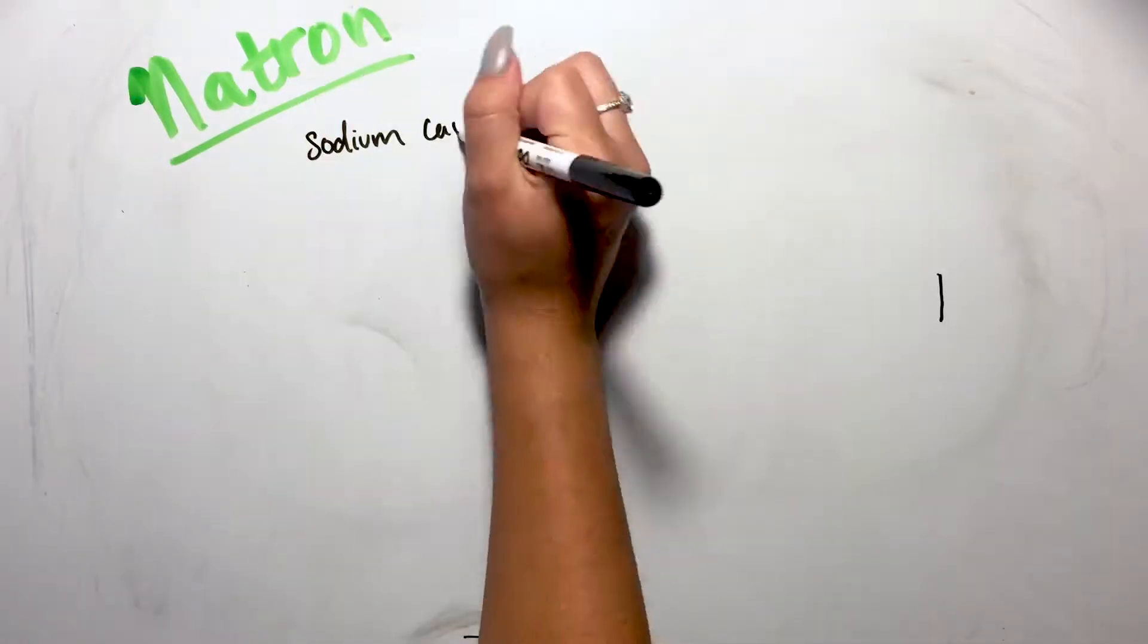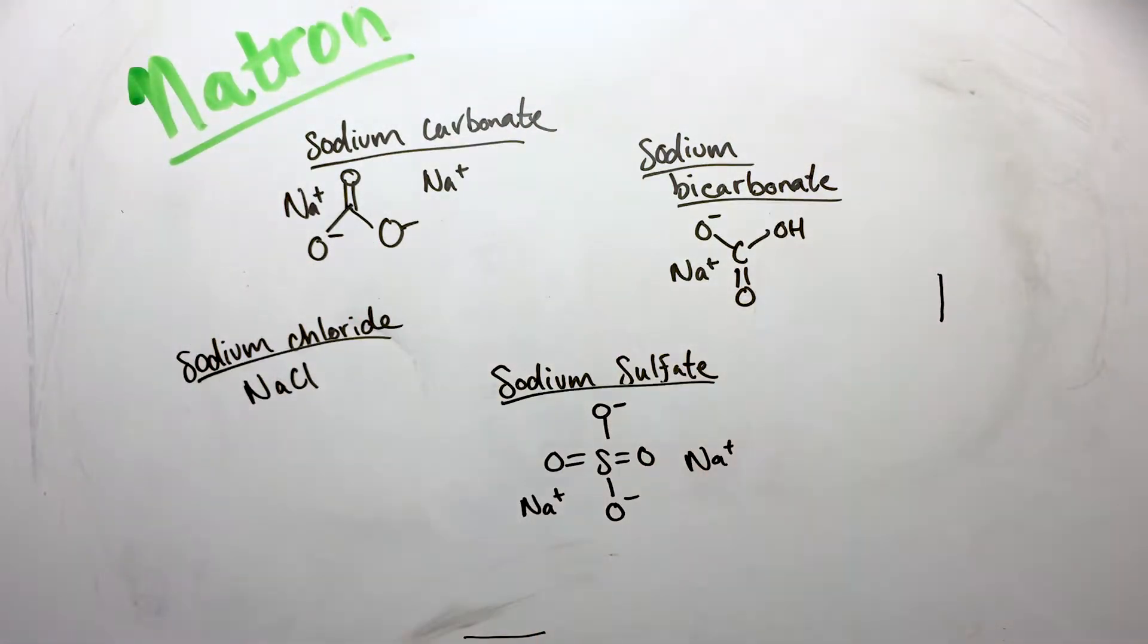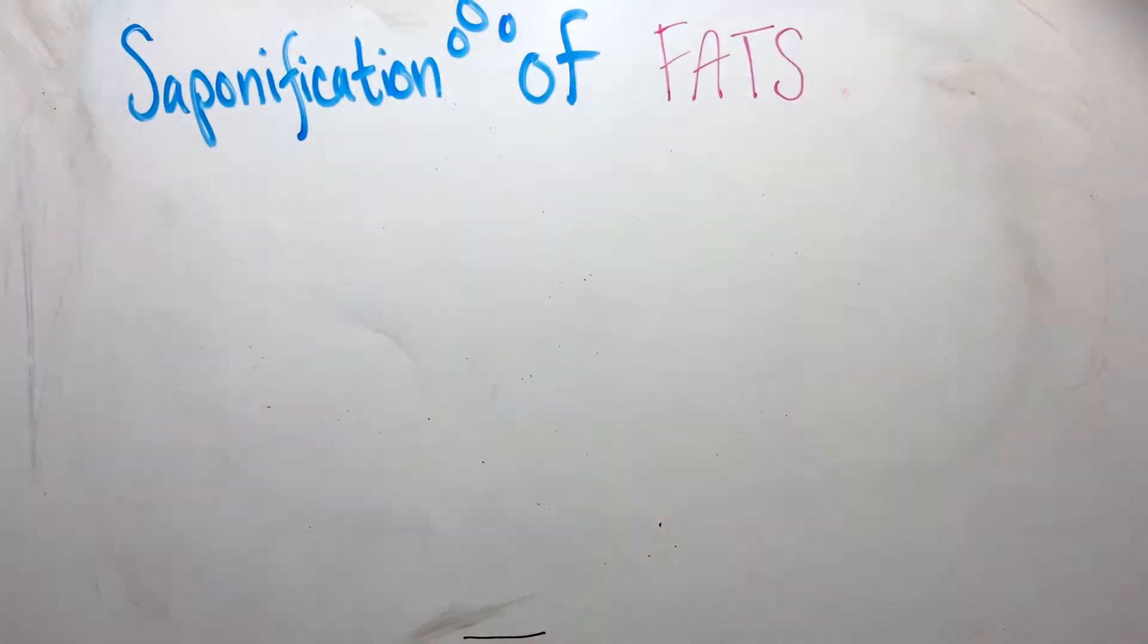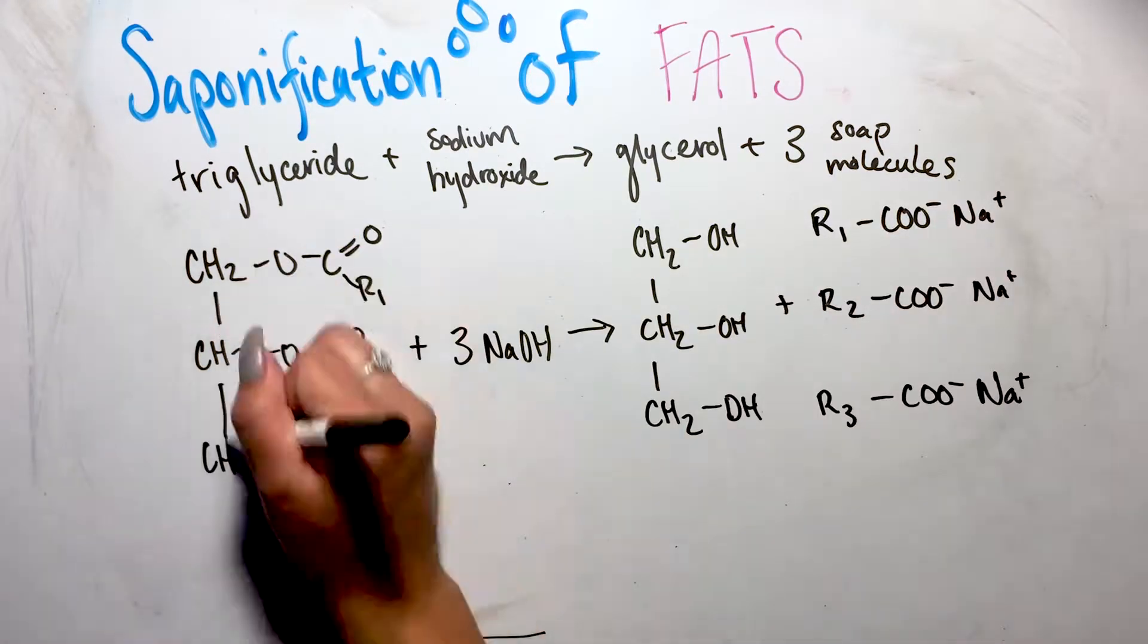The body is stuffed with natron, a salt mixture consisting of sodium carbonate and sodium bicarbonate, as well as small amounts of sodium chloride and sodium sulfate. While this natron mixture is hygroscopic, meaning it absorbs water pretty darn easily and speeds up desiccation, natron also saponifies body tissue into soap which prevents decomposition.